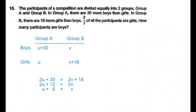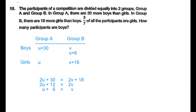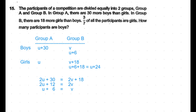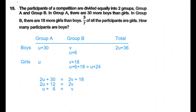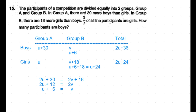Now we have v = u + 6, so wherever we have v we can replace it with u + 6. In Group B, the number of boys is v = u + 6, and the number of girls is v + 18 = (u + 6) + 18 = u + 24. Now we have both boys and girls in both groups expressed in terms of u — just one variable. The total number of boys is (u + 30) + (u + 6) = 2u + 36. The total number of girls is u + (u + 24) = 2u + 24.